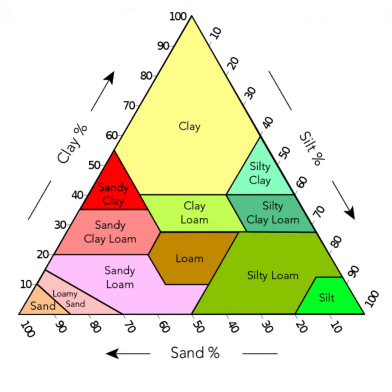Regions: the triangle is divided into different regions or textural classes. The position of a soil sample within the triangle determines its textural class. The major textural classes include sandy soils, predominantly sand.